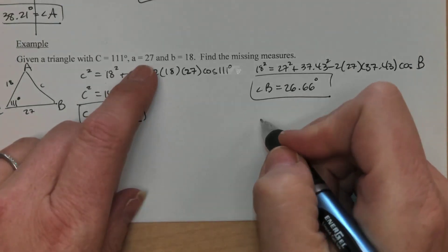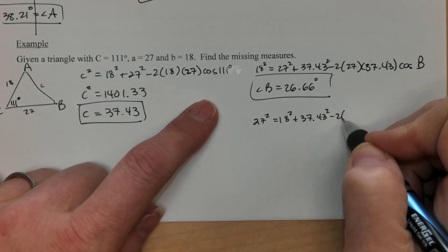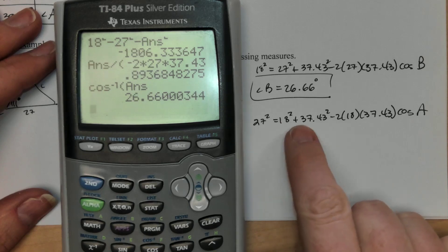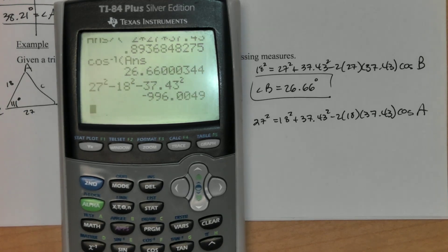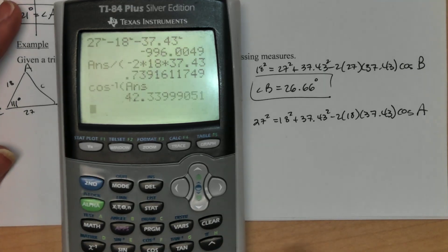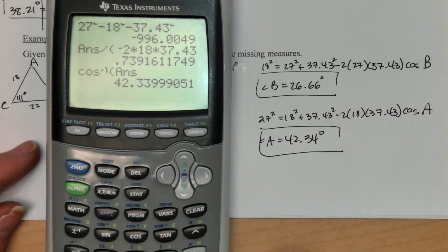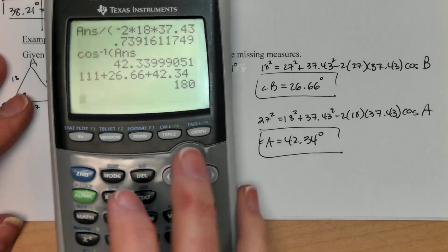Last one we've got to find is angle A, so I'm going to set up for that. I got 27² = 18² + 37.43² - 2(18)(37.43)cos A. So again, just like above, we're going to subtract the first two, divide by the second chunk. So 27² - 18² - 37.43², then divide by 2(18)(37.43). And this time when I cosine inverse, I get about 42.34°. Just going to double check my 180. So my triangle should add up to 180. I started with 111, I got 26.66 and 42.34, and I'm right on 180. So did that one right as well.